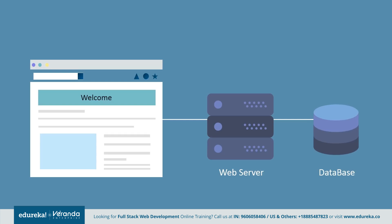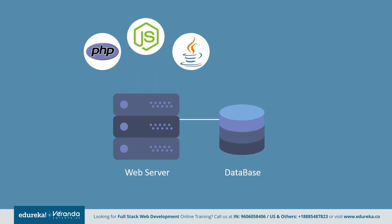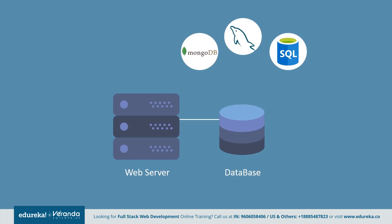The role of a full-stack developer is to create an application that fills a web page with the required resources by pulling data from the database. This application is programmed using server-side languages like Java, Python, PHP, and Node.js, while the database is managed using MySQL, MongoDB, and SQL. The back-end serves the required resources to the user.